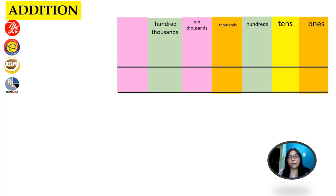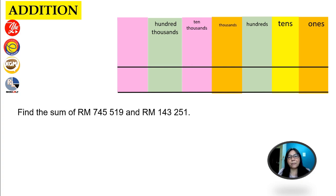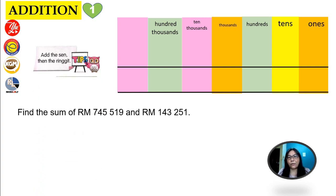Before you add, we have to remember that we are going to follow place value. When you add a number — for example, the question goes: find the sum of RM745,519 and RM143,251. We're going to add the sen first, then only the ringgit. But according to this question, we don't have sen, so we're just going to add the ringgit starting from the place value of ones.